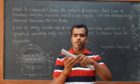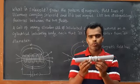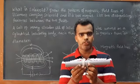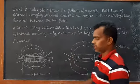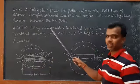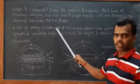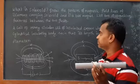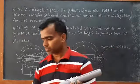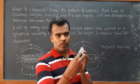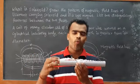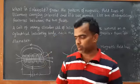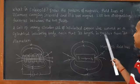This is what we call a solenoid — the coils are wound in a cylindrical shape on an insulated body, and the wire itself is also covered by insulating material. It is a coil of many circular turns of insulated copper wire wound on a cylindrical insulating body, such that its length is greater than its diameter.